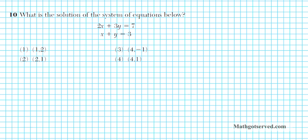Let's take a look at the last one in this installment, number 10. What is the solution of the system of equations: 2x plus 3y equals 7, and x plus y equals 3? There are different ways to solve a system of equations — graphing, elimination, substitution, or using matrices. These two equations are in standard form, so it's easier to solve by elimination.